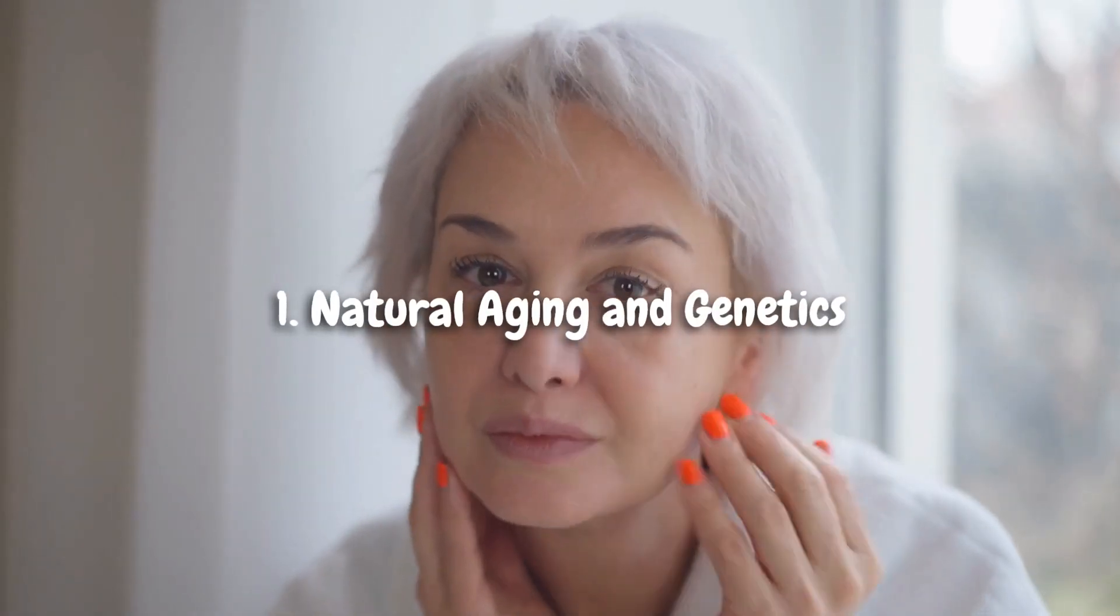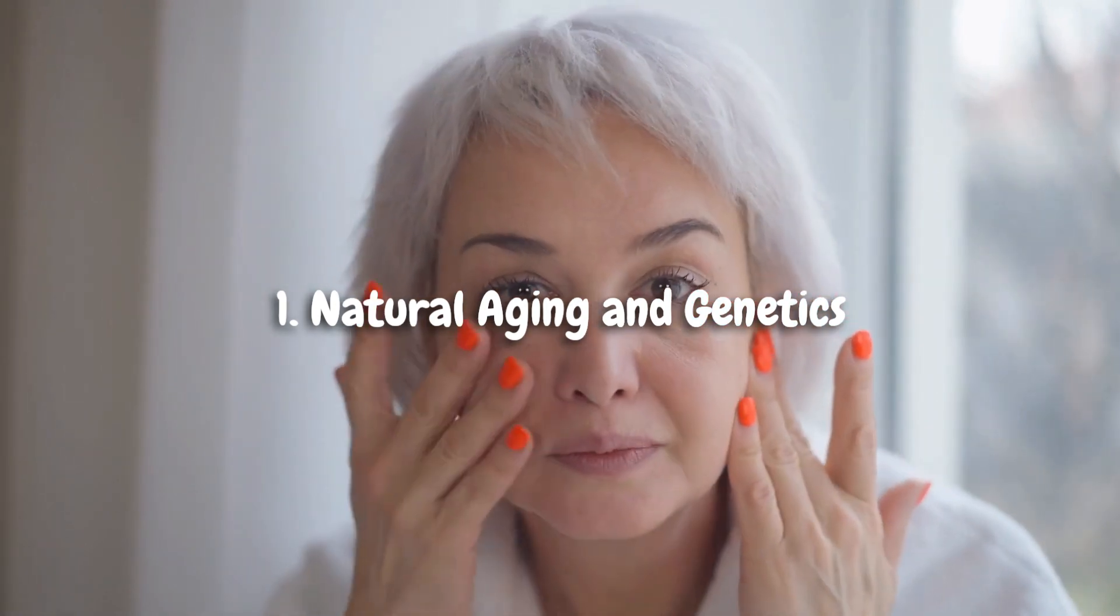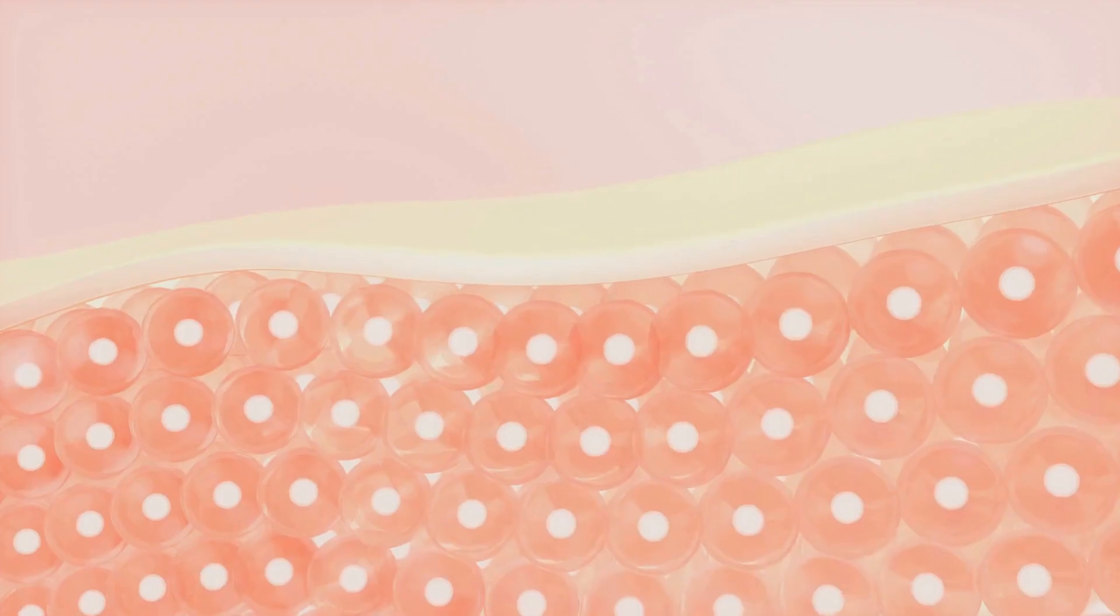1. Natural Aging and Genetics. As we age, it's common for vertical lines to appear on our nails. These natural ridges, known as age-related or longitudinal ridges, develop due to a gradual decrease in cell turnover and collagen production.